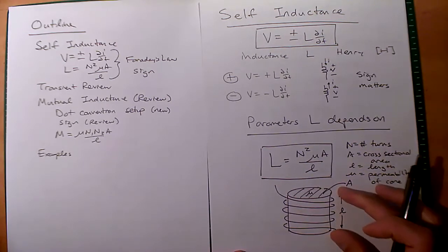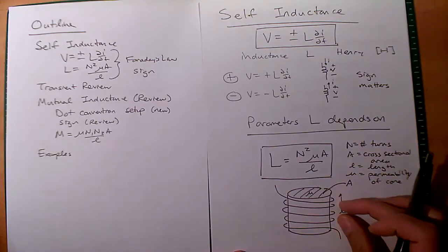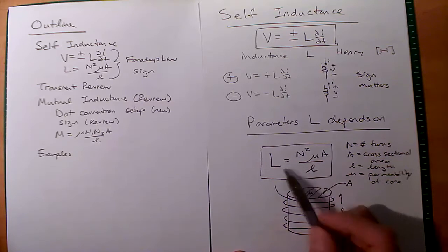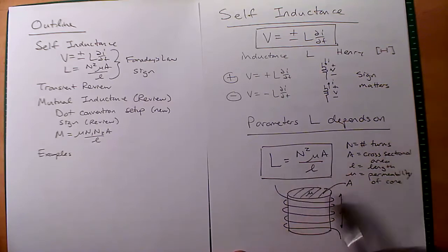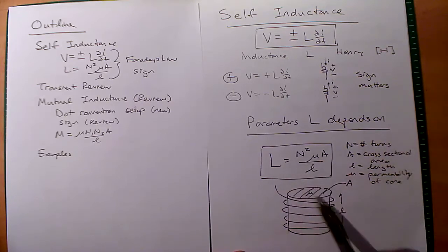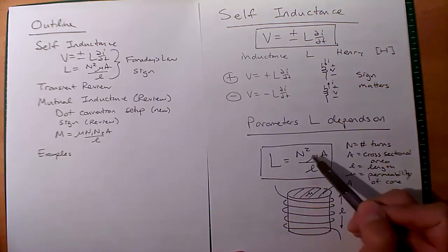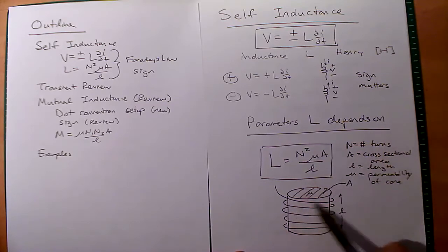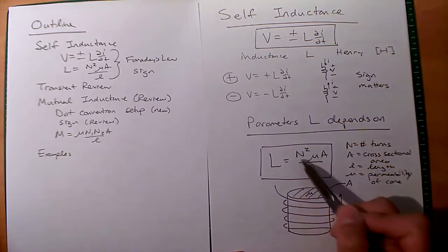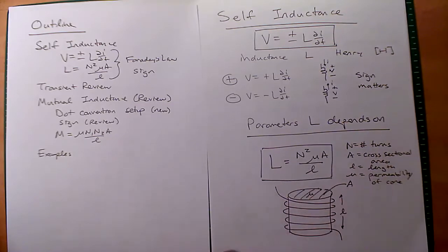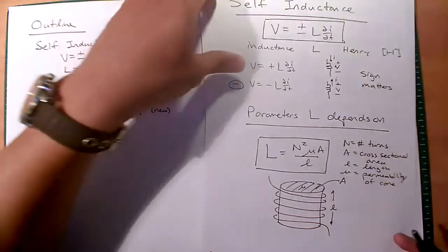You can see that as I decrease L, I actually get a bigger inductance. If I get more turns, it's very sensitive to the number of turns. So if I double the number of turns, I actually quadruple the self-inductance.